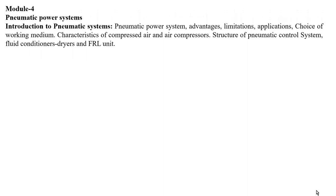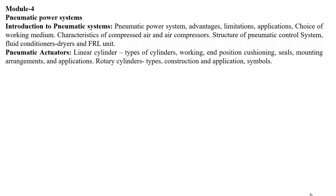Module 4 covers pneumatic power systems, including the introduction to pneumatic systems, their advantages, limitations, and applications. The working medium is mainly air. Topics include characteristics of compressed air, air compressors, the structure of a pneumatic control system, fluid conditioners, dryers, FRL units, different pneumatic actuators, and different pneumatic control valves.